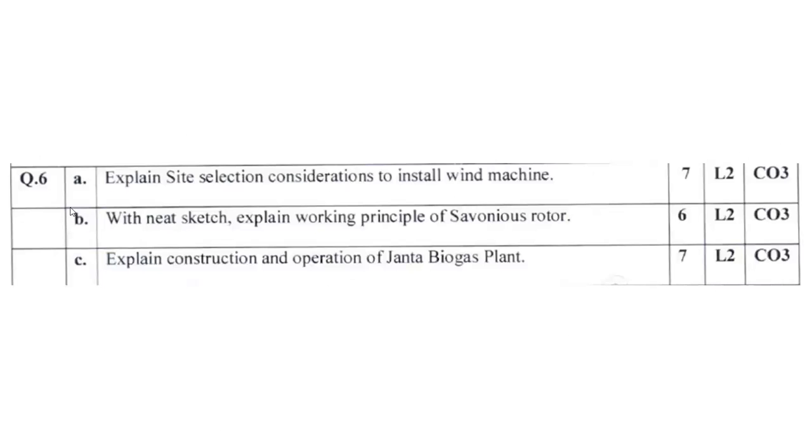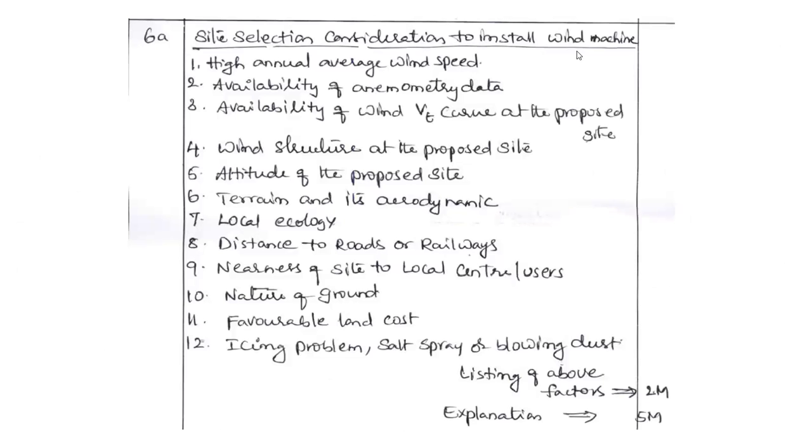We will move on to question number 6a: Explain the site selection criteria of installed windmill machine. High annual average wind speed - approximately we have to count at least 20 kmph, or if you convert in terms of meter per second at least 5 meter per second wind speed should be there in that particular area. Availability of anemometry data. Previous data is available actually, it should be available. Then only we can predict whether the project will be feasible or not.